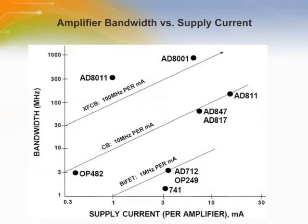Achieving higher bandwidths for less power is extremely critical in today's portable and battery operated communications equipment. The rapid progress made over the last few years in high speed linear circuits has hinged not only on the development of IC processes, but also on innovative circuit topologies. The evolution of high speed processes using amplifier bandwidth as a function of supply current as a figure of merit is shown in figure 1.1.